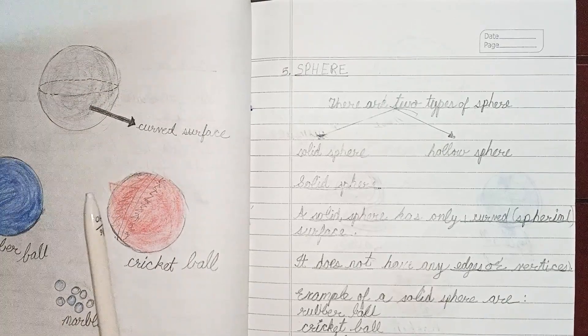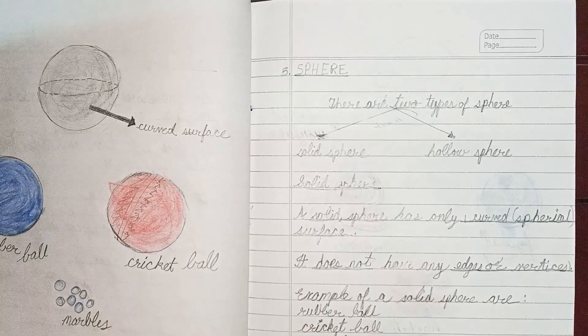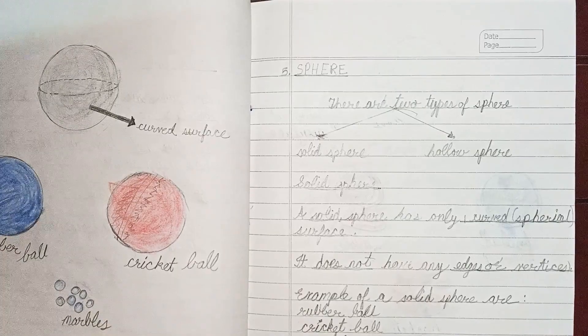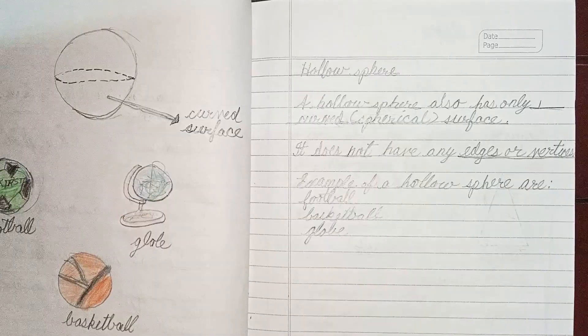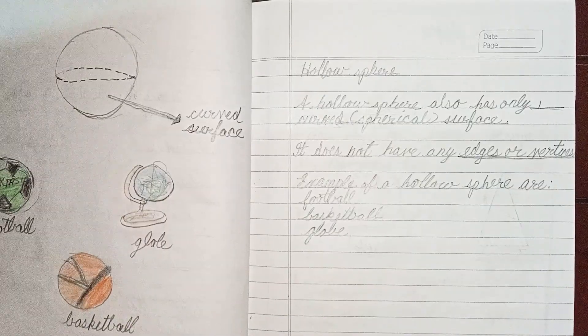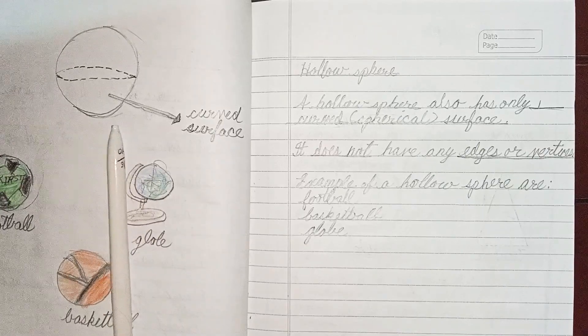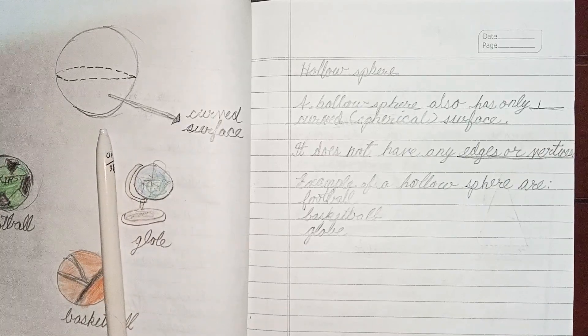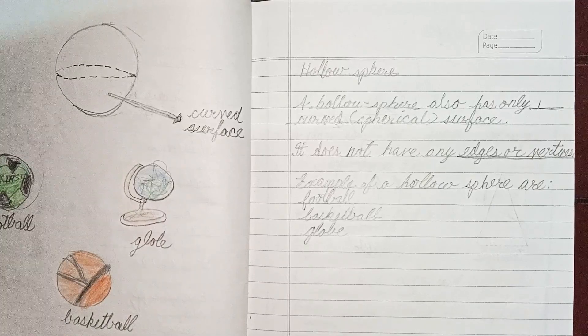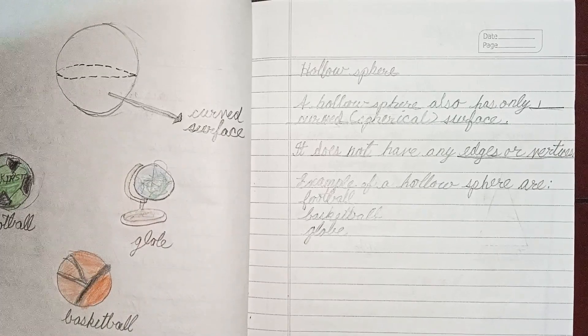It does not have any edges or vertices. For example, rubber ball, cricket ball, marbles. And hollow sphere also has only one curved surface. It does not have any edges or vertices. For example, basketball, globe, football, etc.